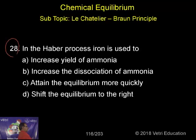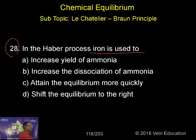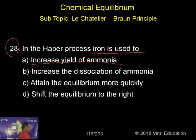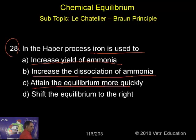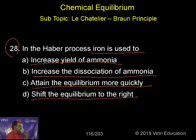So, question 28. In the Haber process, iron is used to — can you follow? — iron is used to: increase the yield of ammonia, increase the dissociation of ammonia, attain equilibrium more quickly, or shift the equilibrium to the right.